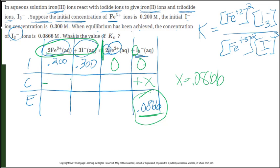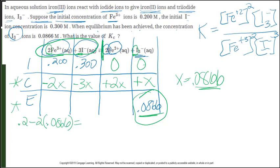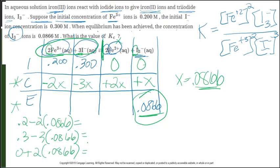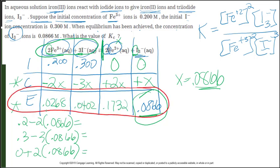At time zero, I have no products. I'm given one equilibrium value: I₃⁻ goes from 0 to 0.0866 with no coefficient, so X equals 0.0866. Looking at stoichiometric coefficients — I lose reactants and gain products: Fe³⁺ changes by −2X, I⁻ by −3X, Fe²⁺ by +2X, I₃⁻ by +X. Plugging in X: Fe³⁺ = 0.2 − 2(0.0866); I⁻ = 0.3 − 3(0.0866); Fe²⁺ = 0 + 2(0.0866). Pause the video and find those equilibrium concentrations.